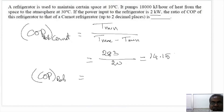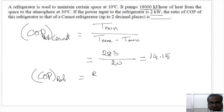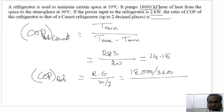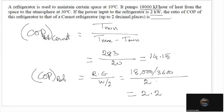Power consumed is 2 kilowatt. It pumps 18,000 kilojoules per hour from the space to the atmosphere. COP of the actual refrigerator equals refrigerating effect divided by work input. That is 18,000 divided by 3600 kilojoules per second, divided by work input of 2 kilowatt, giving 2.5.